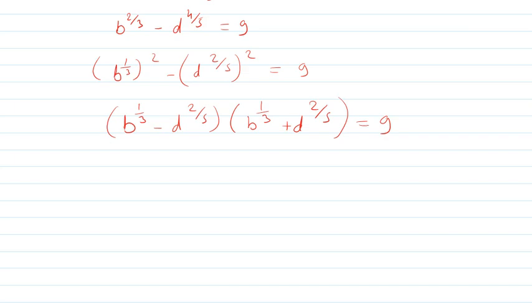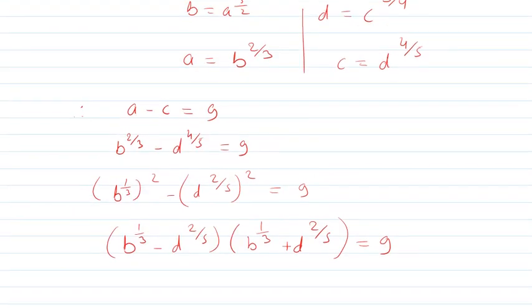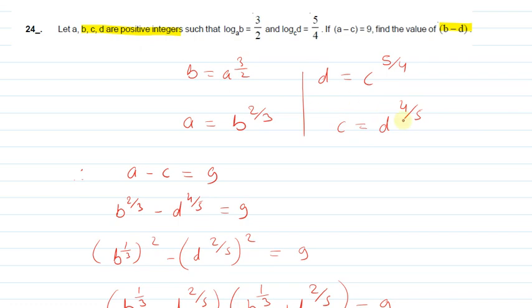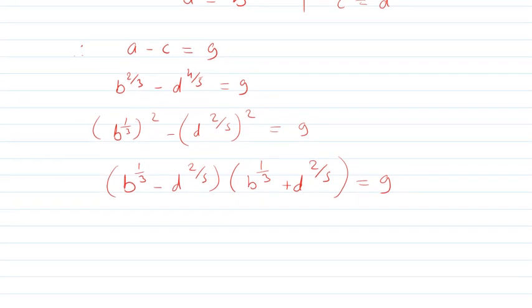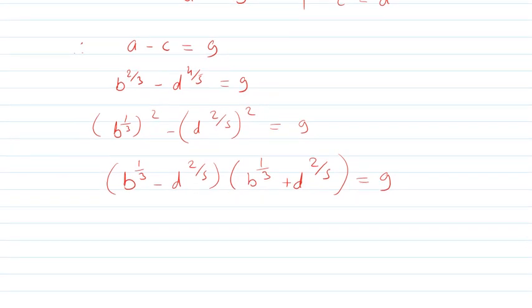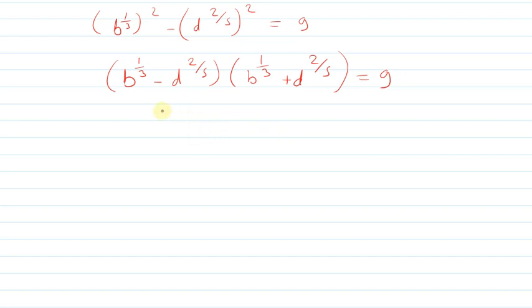Okay, b and d are given here as positive integers. Now let's take a look at this part of the question. Since b and d are positive integers, b power 1/3 and d power 2/5 would be irrational unless special cases. This is a positive number and this is a positive number.